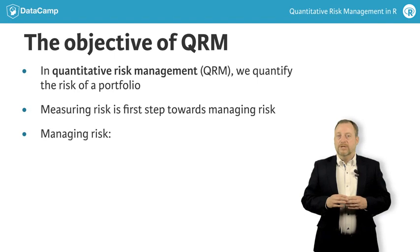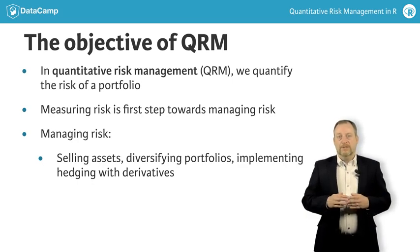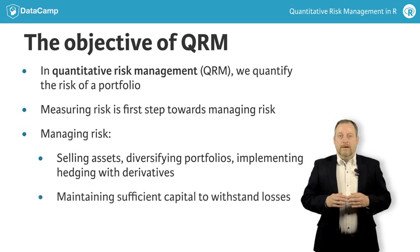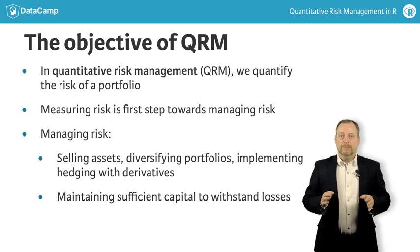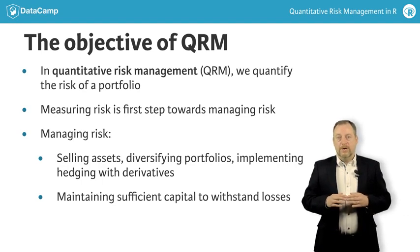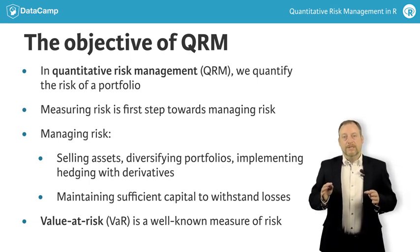Managing the risk can entail many things. For example, you might try to reduce the risk by selling assets, by acquiring new assets to increase the diversification of the portfolio, or by using so-called hedging strategies. For banks and insurers, an important part of managing risk is making sure they have sufficient capital to withstand large losses on their portfolios and remain solvent. For this purpose, they compute measurements of the amounts that they could lose in periods of extreme market stress. A well-known example of one of these risk measures is value at risk.